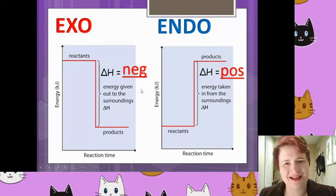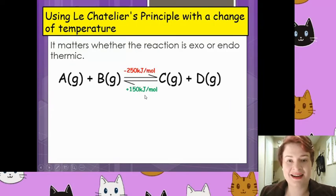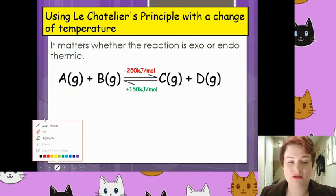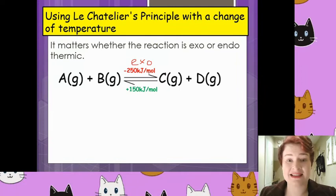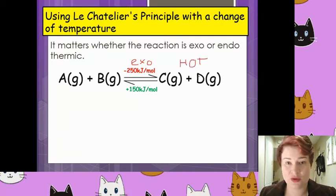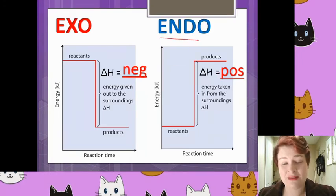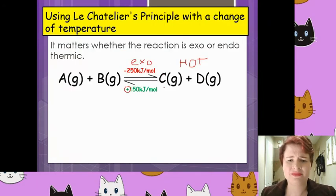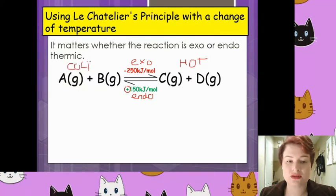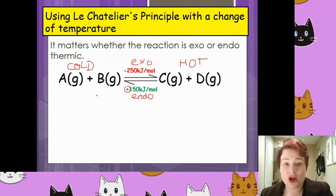So that negative value means the forward reaction is exothermic, so we label that as exo. The exothermic direction is always going to point to the hot side. The reverse reaction has a positive number, which means it's endothermic, so that is the cold side. We can say within a reversible reaction there are exothermic parts and endothermic parts, but we can also say a reaction is overall exothermic or endothermic.